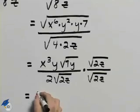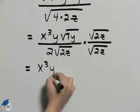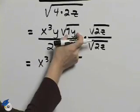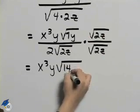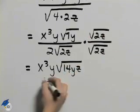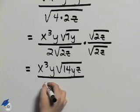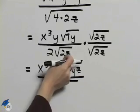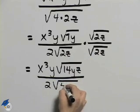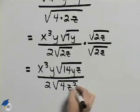So when I multiply, I'll have x cubed y. The square root of 7y times the square root of 2z will give us 14yz. On the bottom we'll have 2 times the square root of 2z times 2z which is 4z squared.